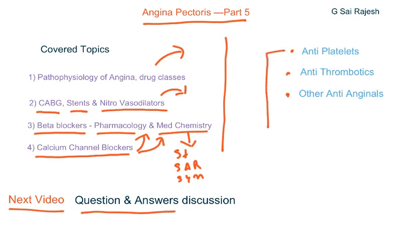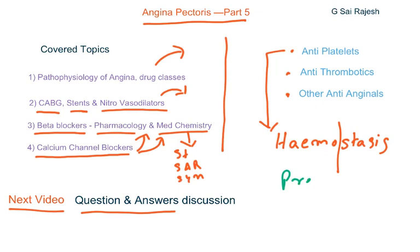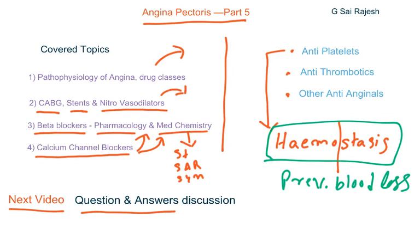Let us see about anti-platelet agents first. Anti-platelets play a major role in hemostasis. Hemostasis — 'heme' and 'stasis' — is nothing but prevention of blood loss. Whenever a blood vessel injury occurs, there is a chance for bleeding or blood loss, and that is arrested by a process called hemostasis.